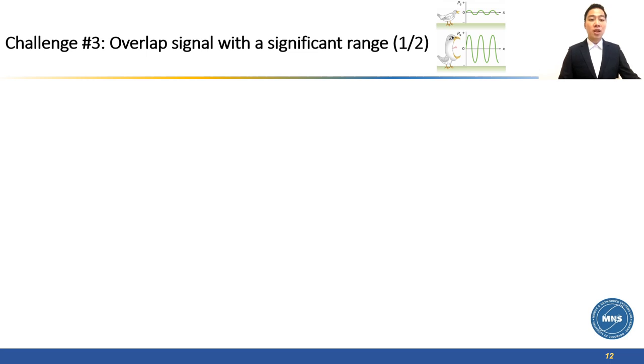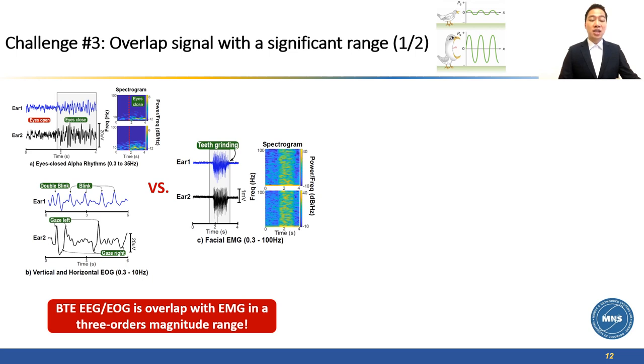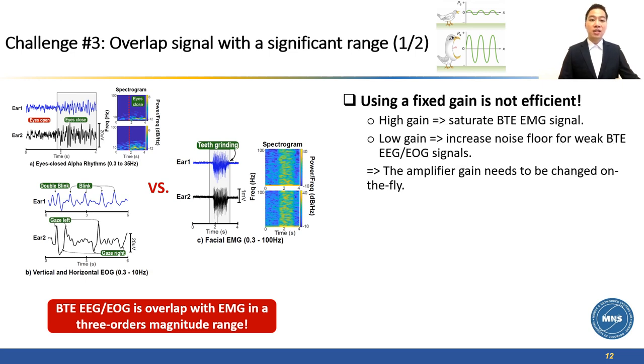One of the challenges that we notice with our behind-the-ear signal is the overlap between EEG, EOG, and EMG signals in three orders of magnitude ranges. As a result, using a fixed gain is not efficient. Using a high gain to have a better resolution for EEG and EOG can saturate EMG signal. On the other hand, using a low gain to avoid saturation will increase the noise floor. To handle this issue efficiently, the gain of our amplifier needs to be changed on the fly.